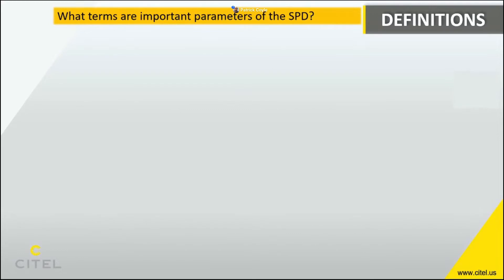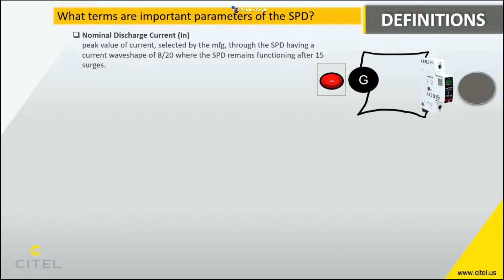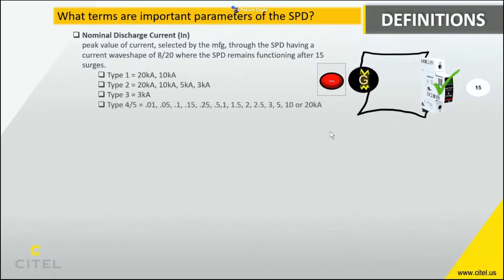There are important terms related to the various UL standards and mandatory codes. The first and very important one is nominal discharge current or In, which comes from UL 1449 in North America. The SPD is connected to a surge generator and hit with 15 impulse shots; if it survives and still works, it passes. Type 1 SPDs are rated for either 20 or 10 kA of In, located closer to the service entrance of the building. The same logic applies for Types 2 and 3 — as we move further into the building, the In is allowed to be lower.